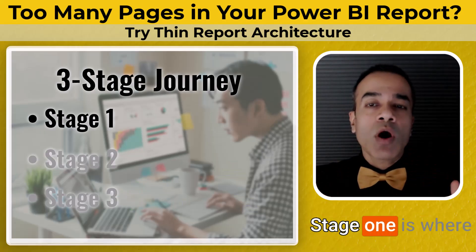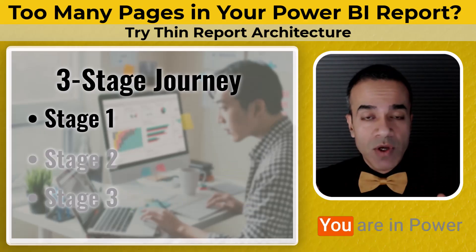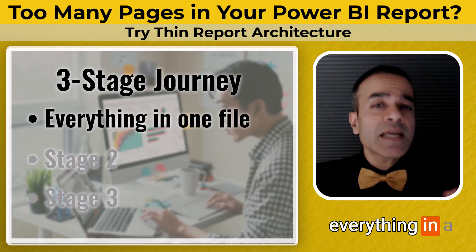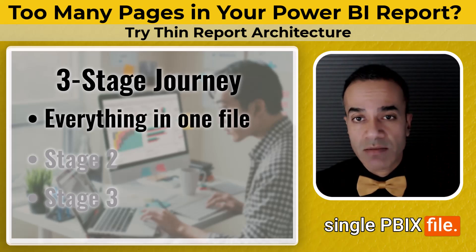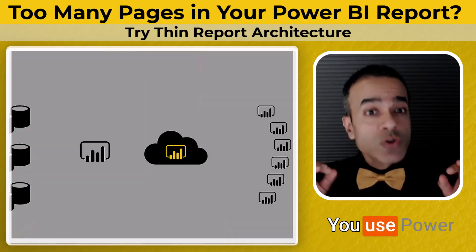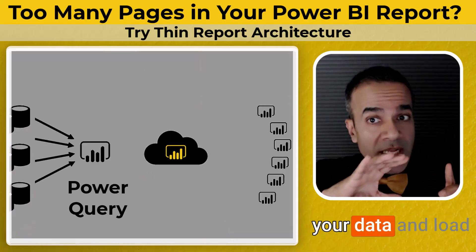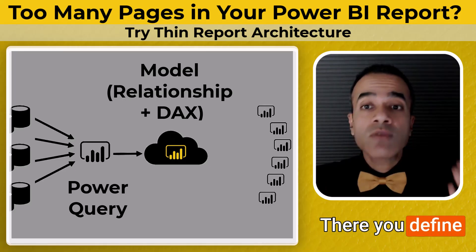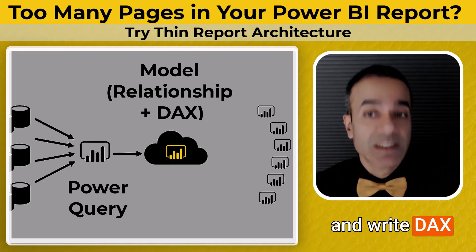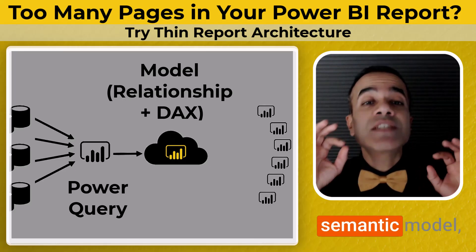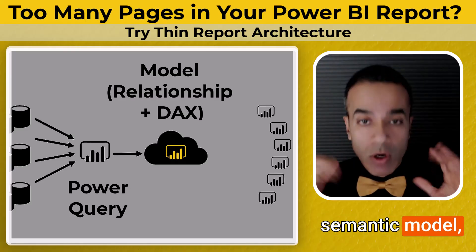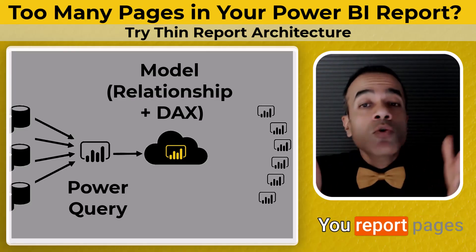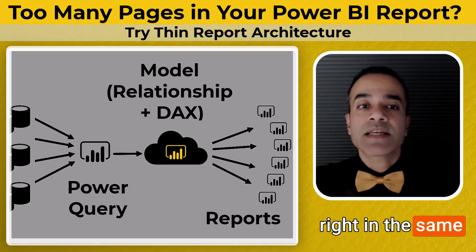Stage one is where everyone starts. You're in Power BI Desktop doing everything in a single PBIX file. You use Power Query to connect your data and load it into your model. There you define relationships and write DAX measures — that's your semantic model — and then you build your visuals and report pages right in the same file.